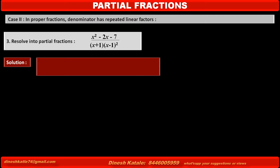Therefore, by taking A as the numerator for (x+1) and two different numerators B and C for (x-1) and (x-1)², we write the first step as: let the given fraction (x²-2x-7) / [(x+1)(x-1)²] = A/(x+1) + B/(x-1) + C/(x-1)².